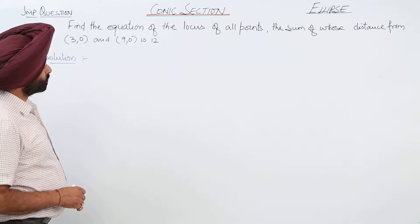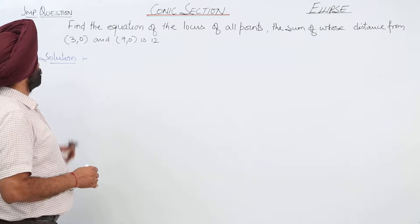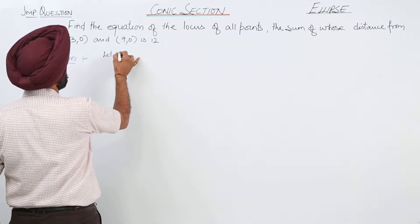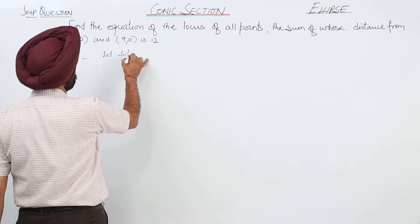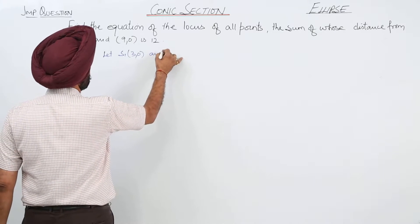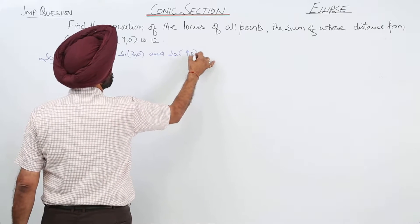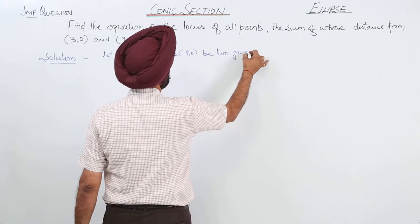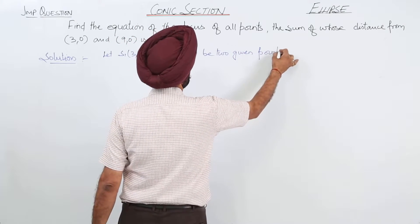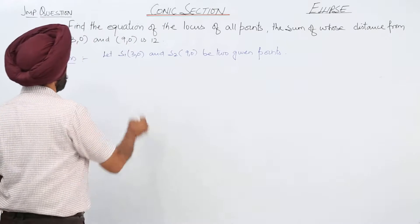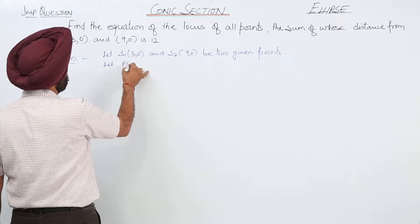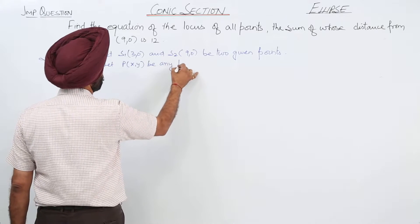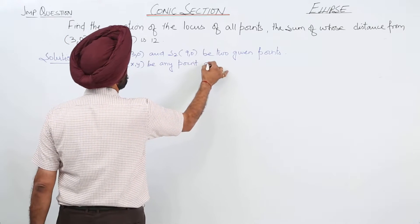Find the equation of the locus of all points the sum of whose distance from 2 points is 12. Let S1 and S2 be the 2 given points. Let capital P with coordinates be any point on the locus.